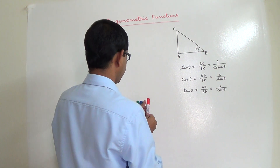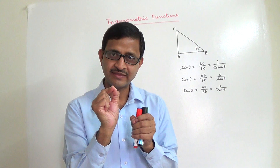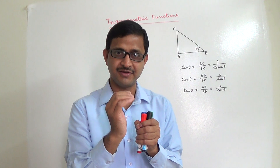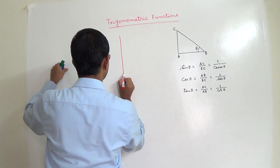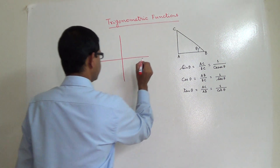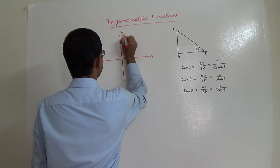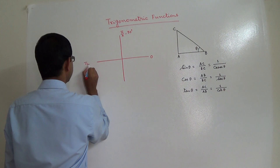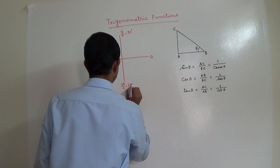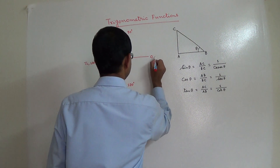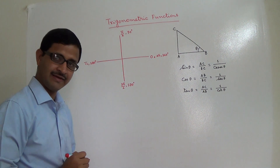To discuss this, we need to break the entire 360 degrees into four quadrants. After 360 degrees the angle repeats. So: 0 degrees is 0 radians, π/2 radians is 90 degrees, π radians is 180 degrees, 3π/2 is 270 degrees, and 2π or 360 degrees brings us back to 0.